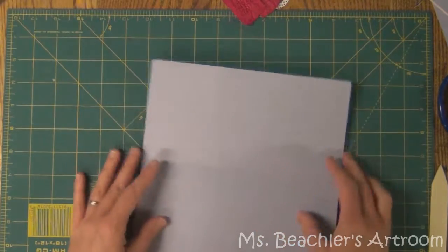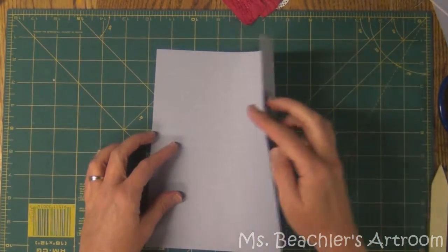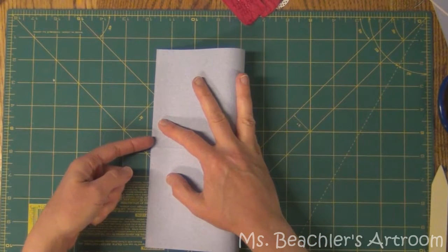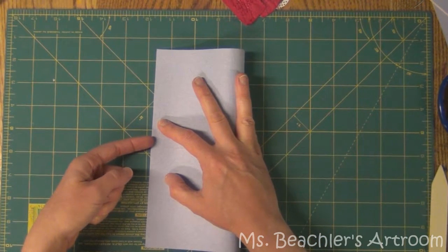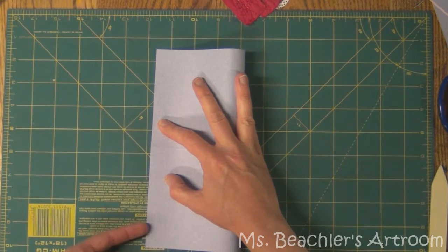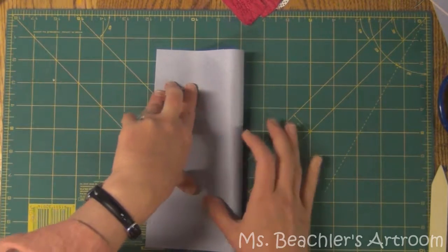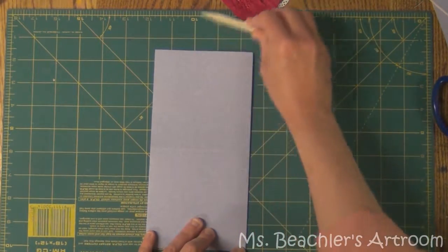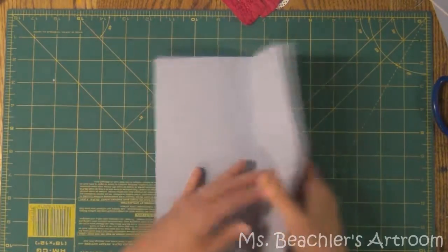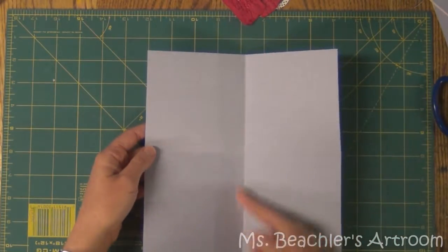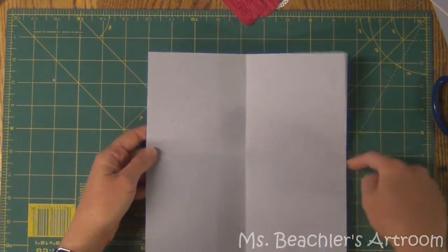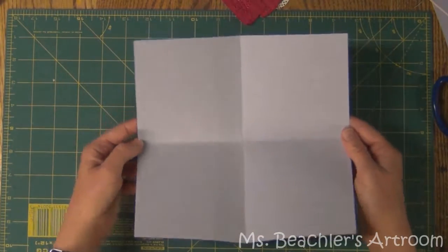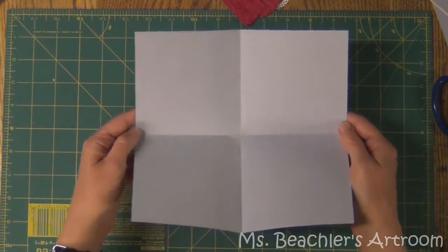Now we're going to open it up. We're going to make another valley fold in the opposite direction. Line it up very precisely. So now we have a fold coming this direction and a fold coming across this direction. Vertical and horizontal and both are valley folds, okay?